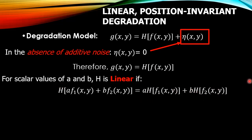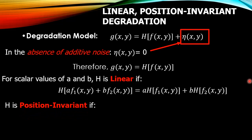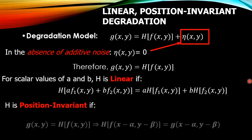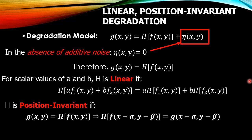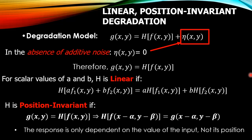We then check for the position invariant condition. An operator with input-output relationship g(x,y) = h[f(x,y)] is said to be position invariant if h[f(x−α, y−β)] = g(x−α, y−β) for any value of f(x,y) and any α and β. This definition indicates that the response at any point in the image depends only on the value of the input at that point, not on its position.